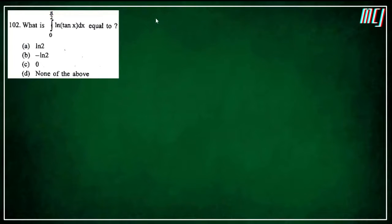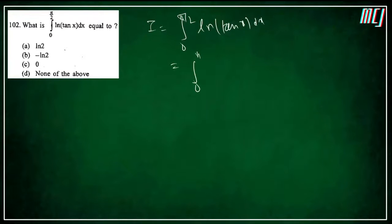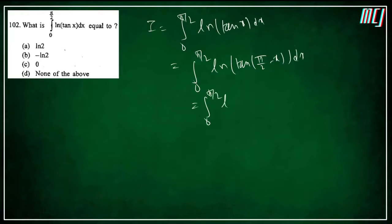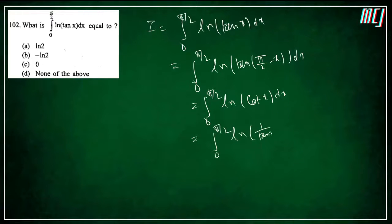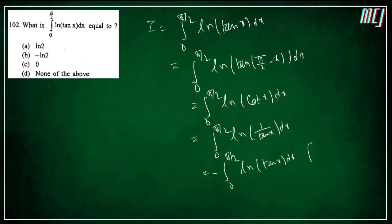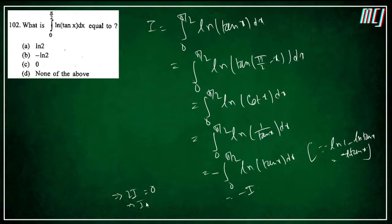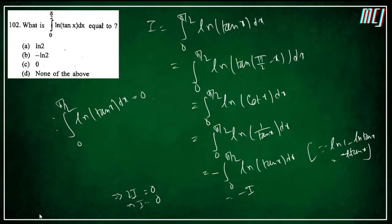Last question: ∫₀^(π/2) ln(tanx) dx. Let I = ∫₀^(π/2) ln(tanx) dx. Using property f(a+b−x): I = ∫₀^(π/2) ln(tan(π/2−x)) dx = ∫₀^(π/2) ln(cotx) dx = ∫₀^(π/2) −ln(tanx) dx = −I. So 2I = 0 → I = 0. Answer option C.